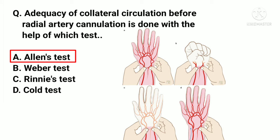Allen's test is performed to find out the adequacy of ulnar circulation before radial artery cannulation. Weber test and Rinne's test belong to hearing assessment. Cold test is a urine test done to examine urine for albumin.